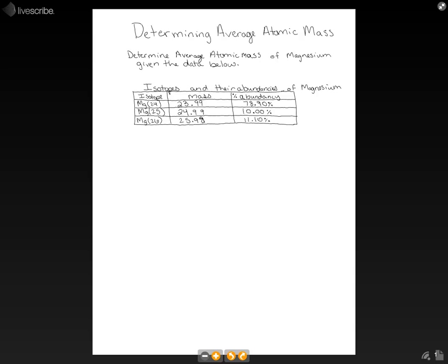We have three isotopes for magnesium. I've shown their mass and their abundances here, and we're going to go through the steps to find this.